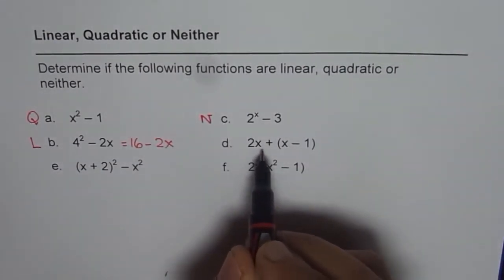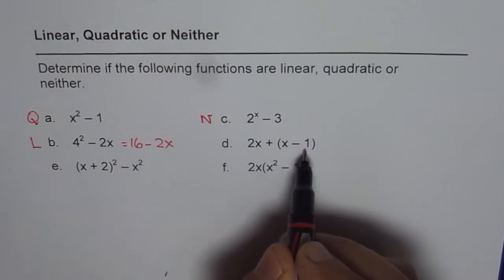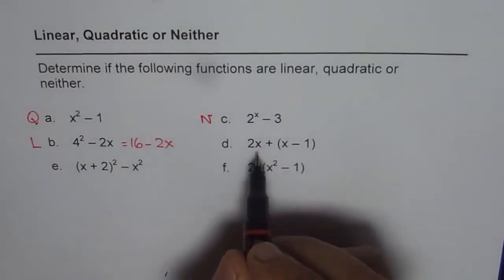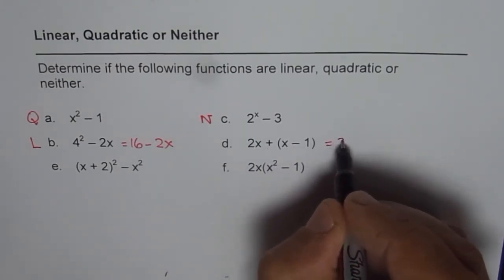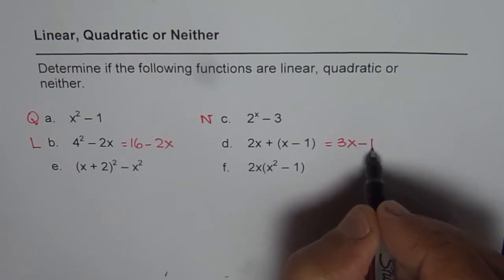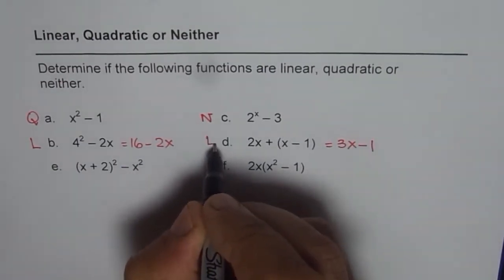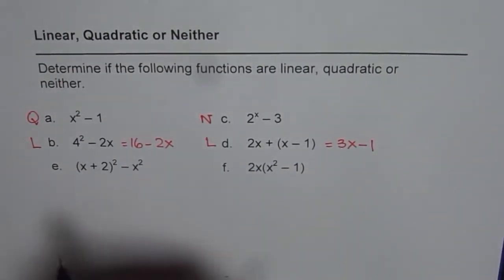D: 2x + (x - 1). So if I actually open the brackets, what do I get? I get 2x + x as 3x - 1. It is a linear function.